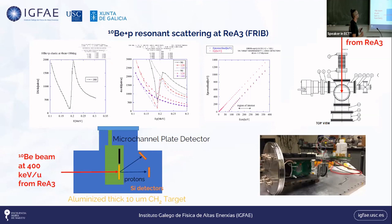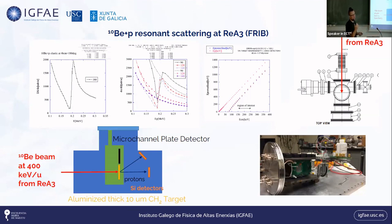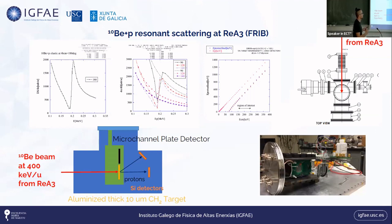What we decided to do is the time-reversal reaction: if the resonance is there, it has to be populated with a simple reaction — Beryllium-10 plus proton going to that resonance. This does not address the branching ratio problem itself, which needs a more dedicated experiment, but it would prove whether the resonance is there and allow us to measure possible branching ratios to other decay channels.